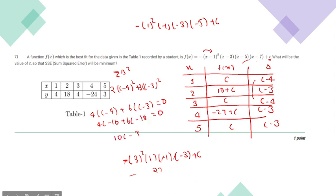So 10c minus 34 will equal 0, therefore c will equal 3.4.